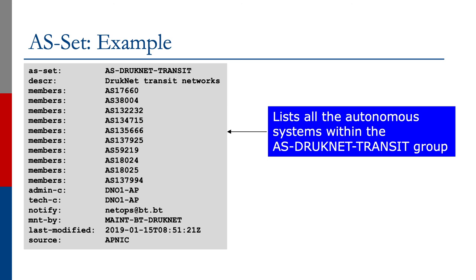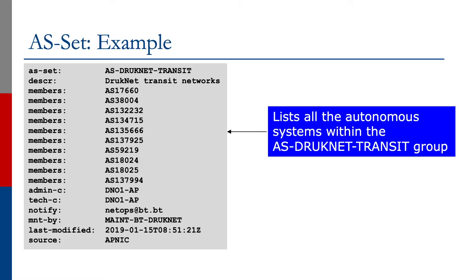Looking at the example on this slide, you'll see a typically available AS set by a transit provider. The transit provider is listing the AS members — in other words, the autonomous systems that it is providing transit to. When somebody needs to set up policy, they can refer to the AS set rather than listing all the members individually. If they get a new customer AS to announce, they simply add it to the AS set, and no other object in the internet routing registry needs to be changed.